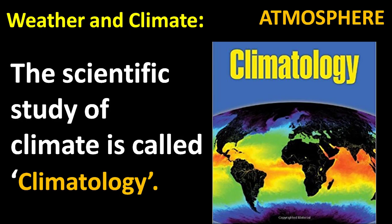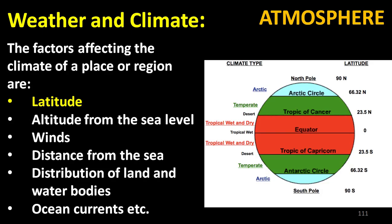The important factors affecting the climate of a place or region are: latitude, altitude from sea level, winds, distance from the sea, distribution of land and water bodies, and ocean currents. These are the important factors which affect the climate of a place or region.